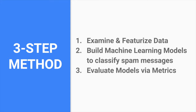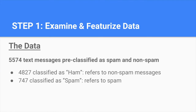We have three steps to achieve our goal. First is to examine and featurize the data. The dataset we have contains 5,574 text messages that are pre-classified as spam and non-spam. Among them, 4,827 are classified as ham, which means non-spam messages, and 747 are spam messages.